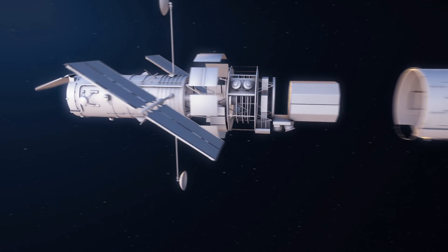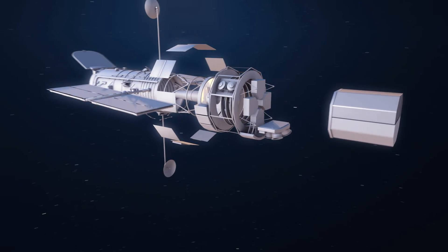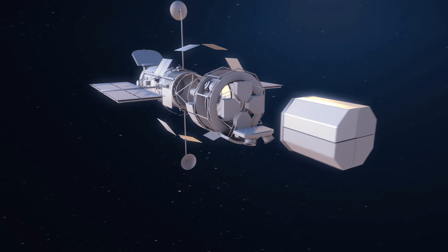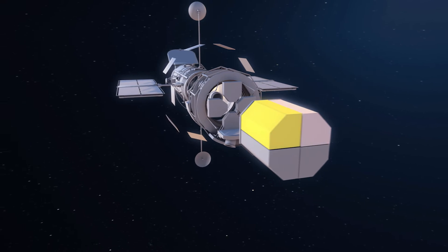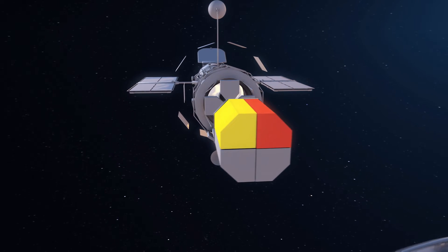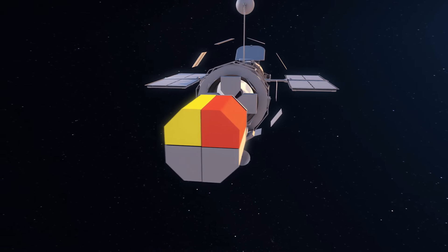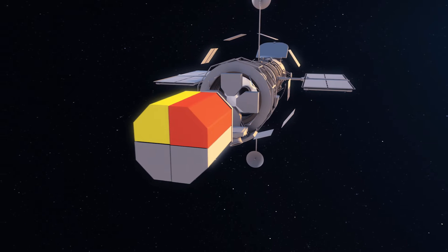Hubble is equipped with two spectrographs: the Space Telescope Imaging Spectrograph, which was installed on the telescope in 1997, and the Cosmic Origins Spectrograph, which was installed in 2009.